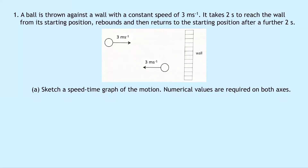Question 1 says that a ball is thrown against a wall with a constant speed of 3 metres per second. It takes 2 seconds to reach the wall from its starting position, rebounds and then returns to the starting position after a further 2 seconds. So it's travelling for 2 seconds at 3 metres per second, hits the wall and returns back to the starting point over another 2 seconds. Part A says sketch a speed time graph of the motion.